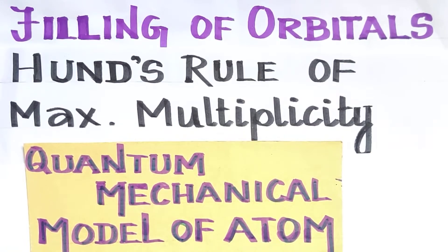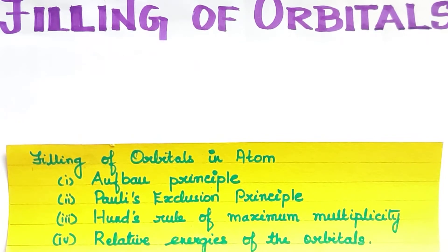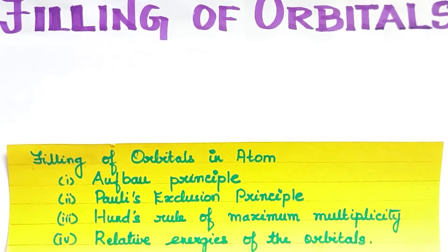In this topic, we will discuss how electrons are filled in orbitals. It follows these four rules: first, the Aufbau Principle; second, Pauli's Exclusion Principle; third, Hund's Rule of Maximum Multiplicity; and fourth, Relative Energies of Orbitals.